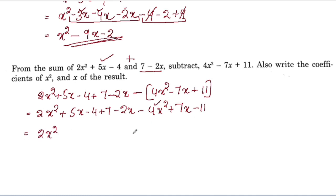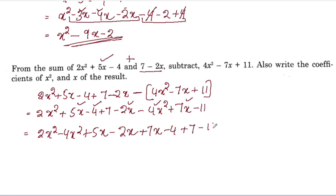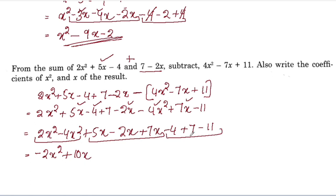Opening the bracket: 2x² minus 4x² gives -2x². For x terms: 5x minus 2x is 3x, plus 7x gives 10x. For constants: -4 plus 7 is 3, minus 11 is -8. The answer is -2x² + 10x - 8.